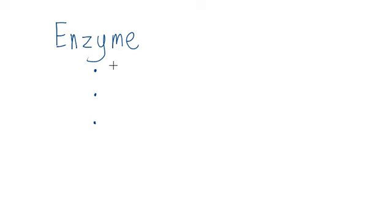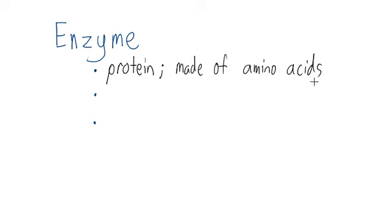Enzymes are a macromolecule. They're proteins, which therefore means they're made of amino acids chained together, and those are made at the ribosome if you remember. Those amino acids chain together and fold to make a shape.